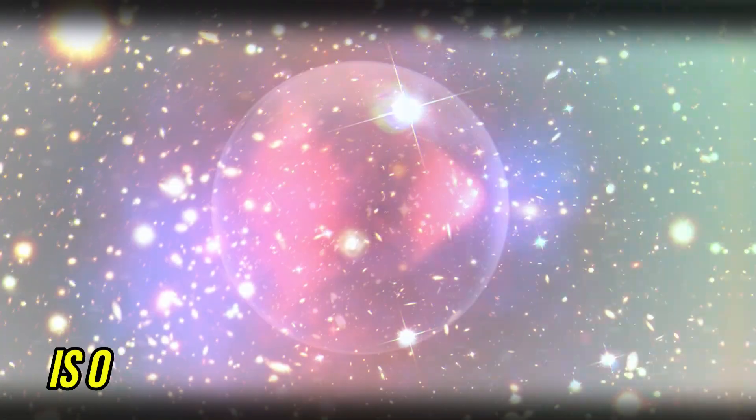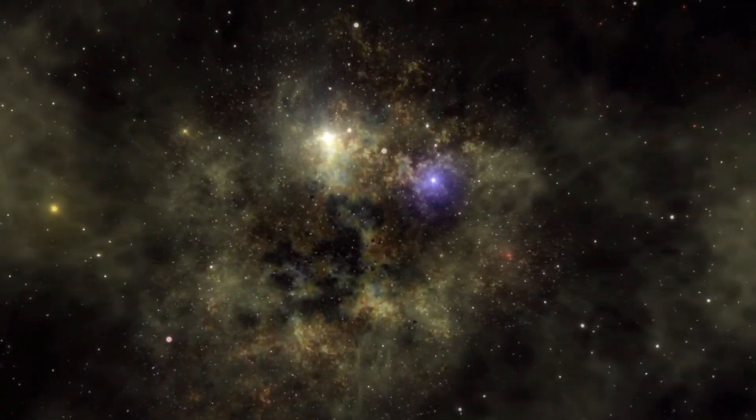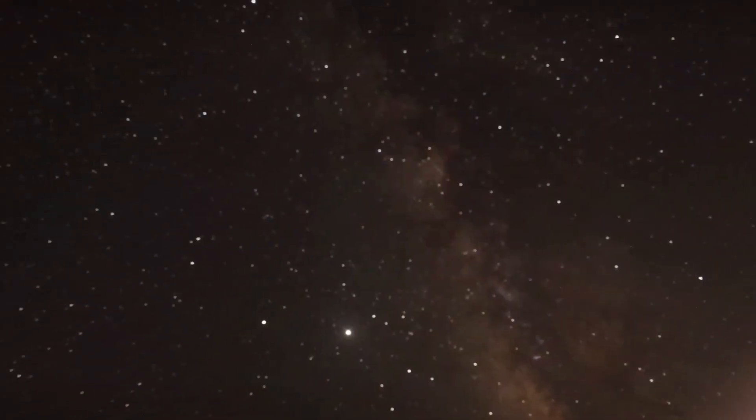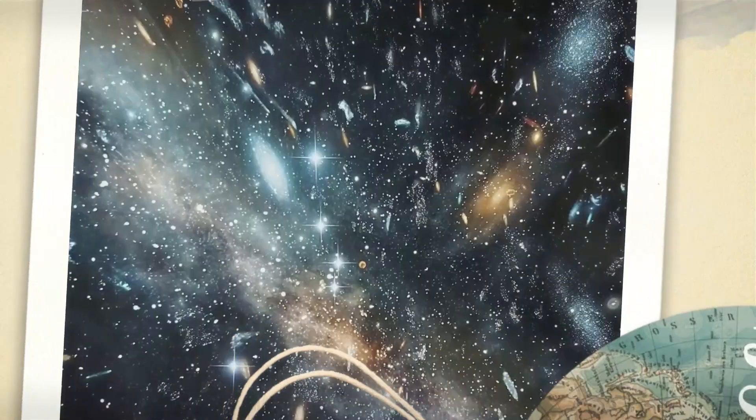Number 9. The observable universe is only a small fraction of the whole. The observable universe refers to the part of the universe we can see or detect, limited by how far light has traveled since the Big Bang. But this observable universe is just a small fraction of the entire cosmos.